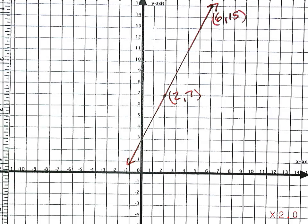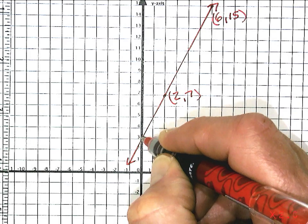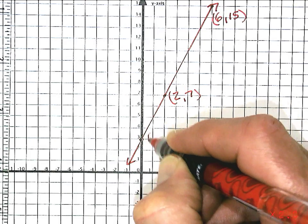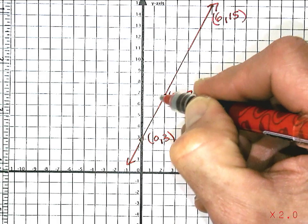And now to get an equation for that line, I still need to find the slope and the y-intercept. I can see that it looks like the y-intercept should be right there at (0, 3), and that the slope looks like it's going up 2 at a time.